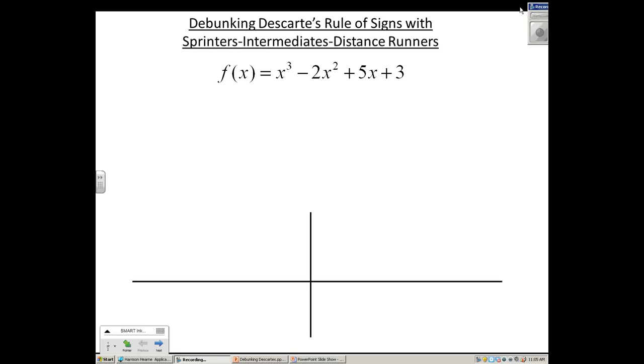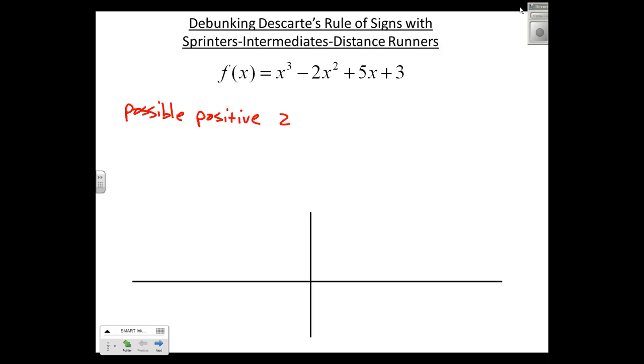All right, welcome back. This is another debunking a mysterious rule, in this case, Descartes' Rule of Signs, which tells us our number of possible positive zeros. Now that's kind of obvious—positive zeros, what do you mean positive zeros?